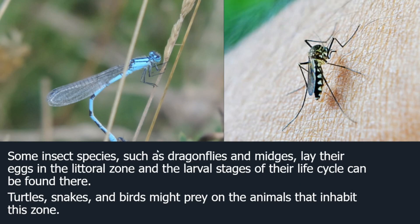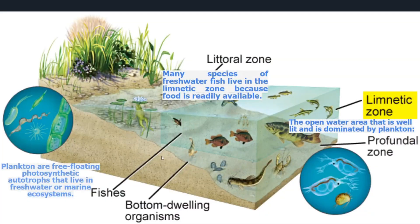Some insects spend most of their lives on land but lay their eggs in the littoral zone. They develop as larvae swimming in water and eventually leave the water to fly later in their life. Other animals such as turtles, snakes, and birds might prey on the animals that inhabit this zone, fish or not. The littoral and limnetic zones will support many species because both have high sunlight, while the profundal zone will more than likely only support bottom dwellers.